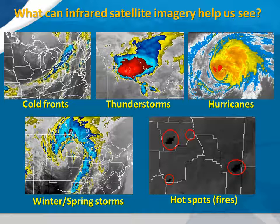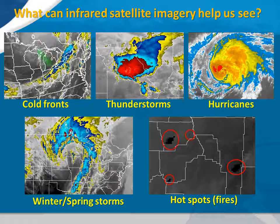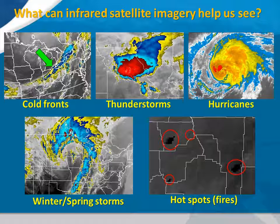Like visible satellite imagery, infrared imagery helps meteorologists distinguish several important features. Here, we can see examples of five of these phenomena. In the top left image, we can see a cold front extending from the eastern Great Lakes southwestward into northern Kansas. Ahead of the front, there is a line of enhanced cloudiness, while behind it we see clearing skies.